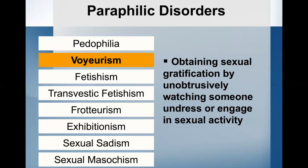Voyeurism — this is our stereotypical peeping Tom. Over a period of at least six months, there have been recurrent and intense sexual arousal from observing an unsuspecting person who is either naked, in the process of taking off their clothes, or engaging in sexual activity. The individual has fantasies, urges, and behaviors of watching somebody engage in these activities. They have either acted on these sexual urges with a non-consenting person, or the sexual urges and fantasies cause significant distress or impairment in social, occupational, or other areas of functioning. The person needs to be at least 18 years of age to get this diagnosis. Importantly, there is no other type of sexual interaction sought with the person being watched. The individual is likely to masturbate during or after watching the person as they fantasize, but they are not generally doing anything to initiate contact with the person they're watching.